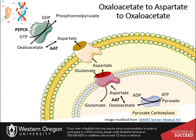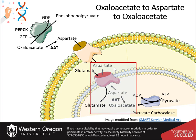Oxaloacetate can then be used as a substrate by the phosphoenolpyruvate carboxykinase enzyme, PEPCK. The glutamate-aspartate transporter has some additional complexities associated with it — it cannot function on its own. It requires the coordinate functioning of the malate-alpha-ketoglutarate antiporter. Together, these antiporters are known as the malate-aspartate shuttle system.